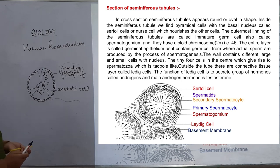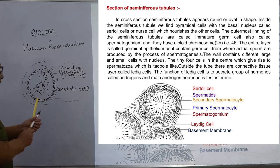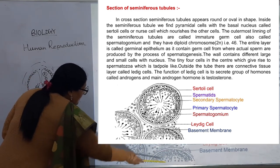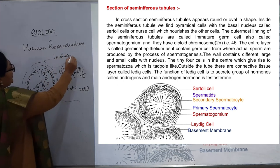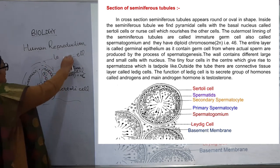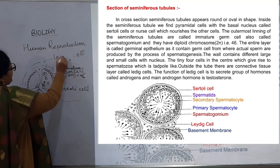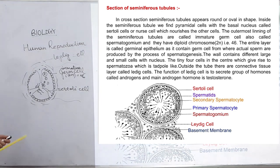Outside the seminiferous tubules, there are connective tissue layers called Leydig cells, also known as interstitial cells of Leydig (spelled L-E-Y-D-I-G). The main function of Leydig cells is to secrete a group of hormones called androgens.